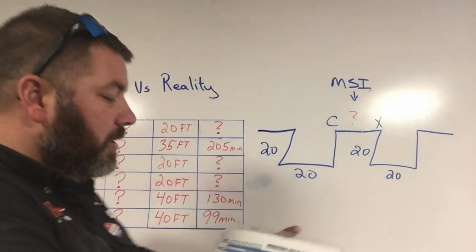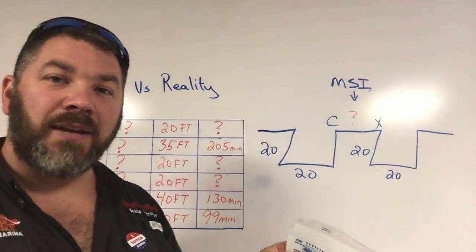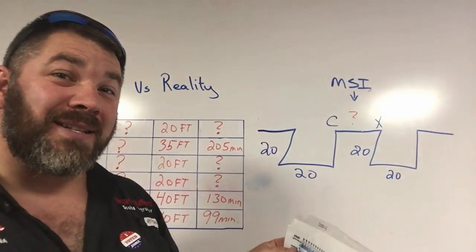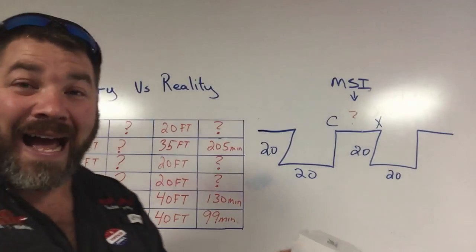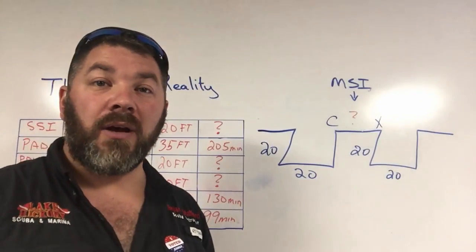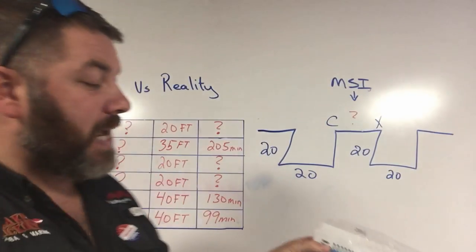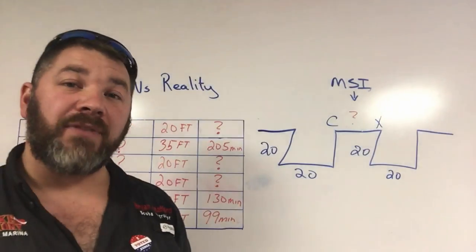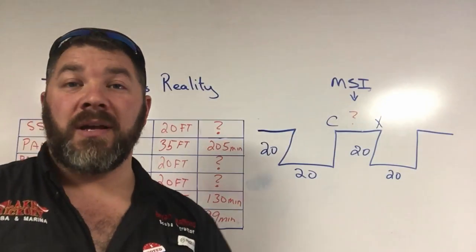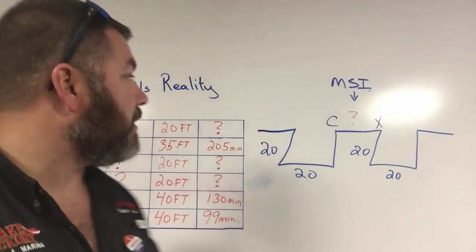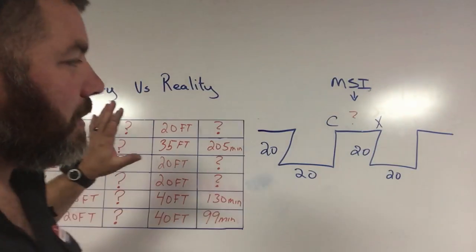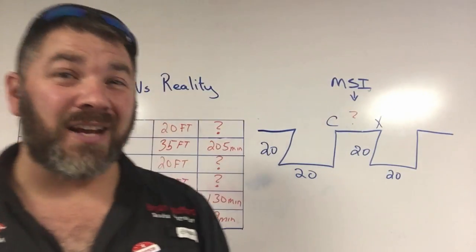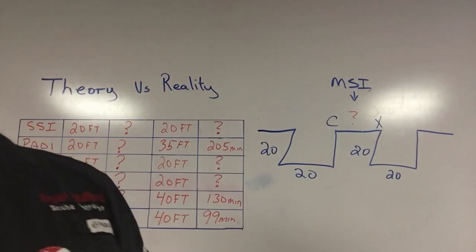Let's look at the tables in general and see why we can't find this. The first thing I notice is I have to round up — I cannot find a 20-foot depth, so I round up. The same applies to dive time: there's no 20-minute bottom time listed, so I have to round that up as well. The dive table itself is not exact.